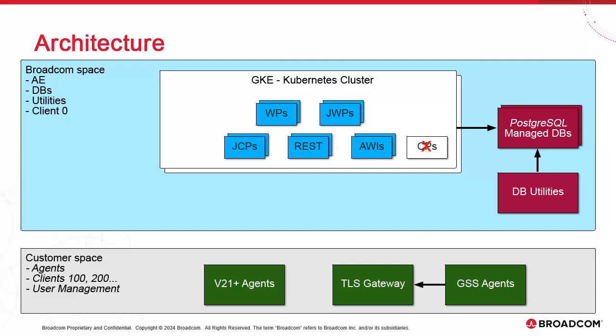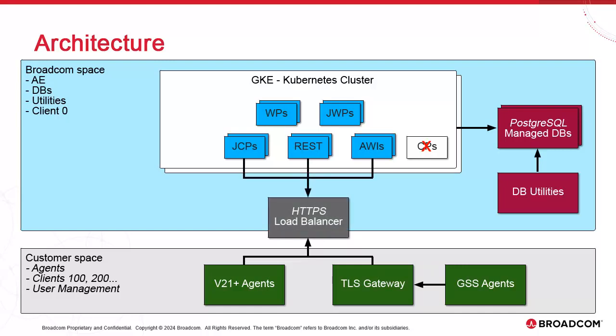In either case, customers will deploy agents as they see fit. Finally, three secure endpoints are available to customers: the JCP, the REST API, and the Atomic Web Interface endpoints exposed via HTTPS. In the agent INI, the JCP URL is used for the connection parameter, and REST and AWI have exposed URLs of their own which can be used anywhere.